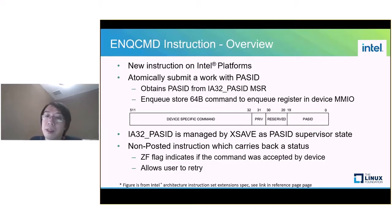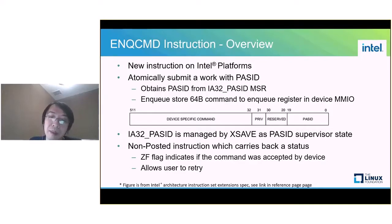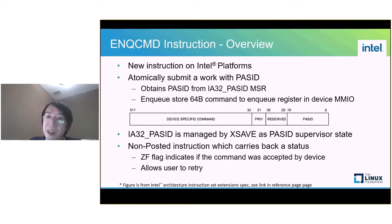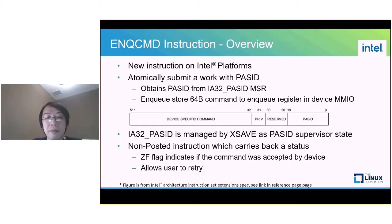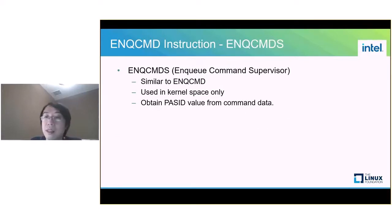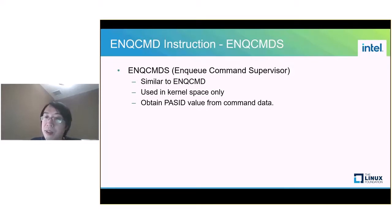ENQCMD is a non-posted instruction which carries a status back indicating if the command was accepted by the device or not. For example, submission will fail if the shared work queue is already full. This allows the submitter to know the submission status and perform a retry if needed. ENQCMD supervisor is similar to the ENQCMD instruction but only works in kernel space, and it obtains the PASID value from the command data directly.